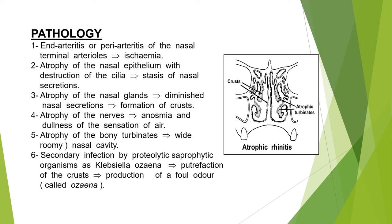Secondary infection by proteolytic saprophytic organisms such as Klebsiella ozaenae causes putrefaction of the crusts and production of a foul odor called ozena. So ozena is a foul odor in atrophic rhinitis patients due to the saprophytic organism Klebsiella ozaenae.